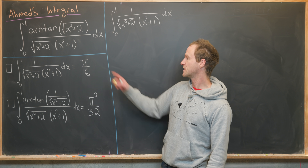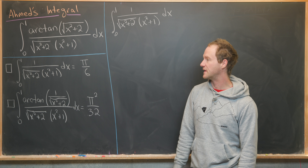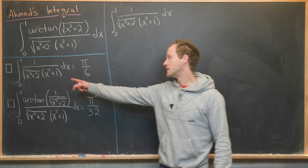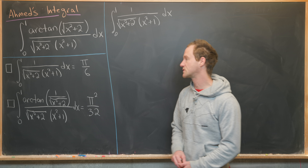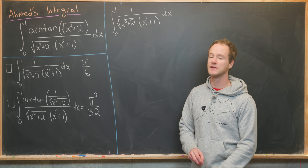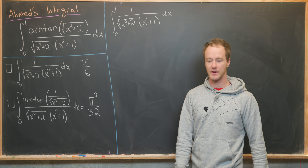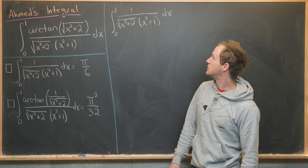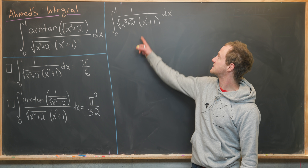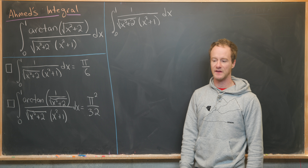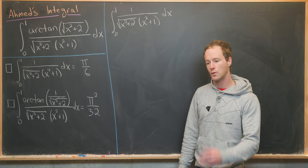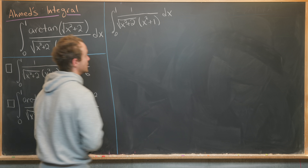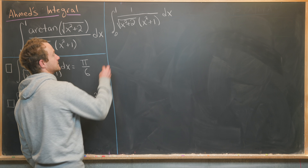So let's look at this first tool: the integral from zero to one of one over the square root of x squared plus two times x squared plus one. I've written that integral up here. Looking at this, you see this x squared plus one term in the denominator, which should give you a hint to do trigonometric substitution. Let's see if that works.